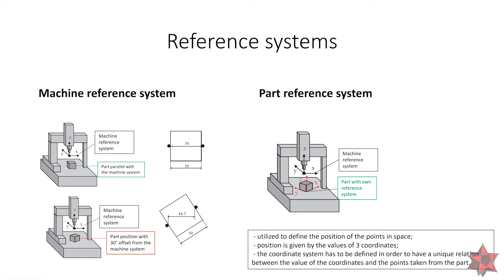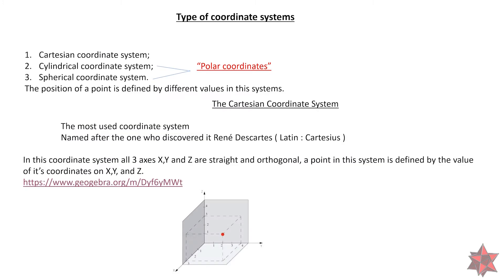The reference system is utilized to define the position of points in space. The position is given by the value of the three coordinates: X, Y, and Z. The coordinate system has to be defined in order to have a unique relation between the value of the coordinates and the points taken on the part. We have three types of coordinate systems: the Cartesian coordinate system, the cylindrical coordinate system, and the spherical coordinate system. The last two are known as polar coordinate systems. The position of a point is defined by different values in each system, and we will talk about each of them separately.